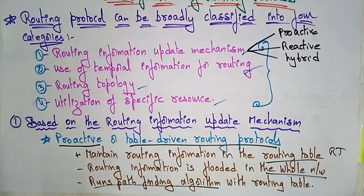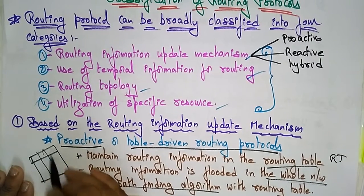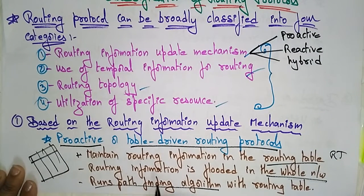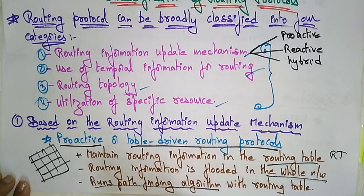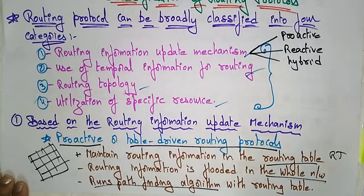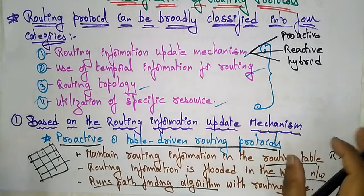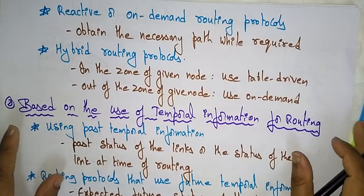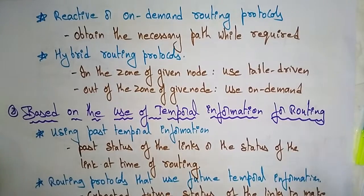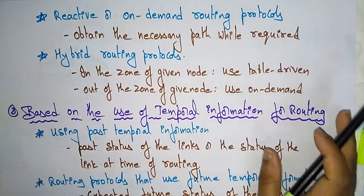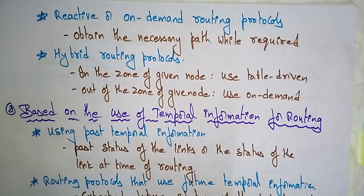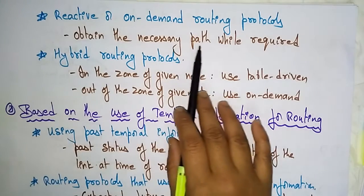To summarize what table-driven does: it first maintains routing information in a table, that routing information is made known to the whole network so each and every node knows where data is coming from and going to, and then it runs a pathfinding algorithm on the routing table to find the best path. The next one is reactive, also called on-demand routing protocol. As the name suggests, it is reactive — it obtains the necessary path only when required, selecting only the required path on demand.